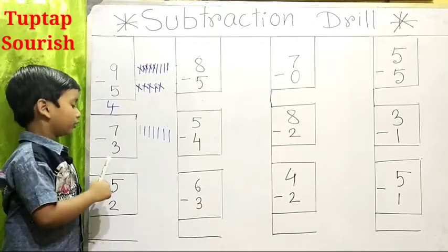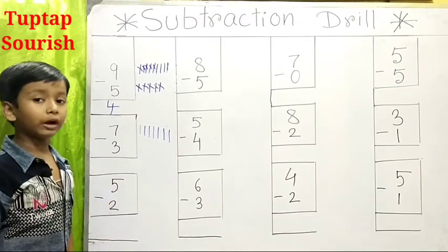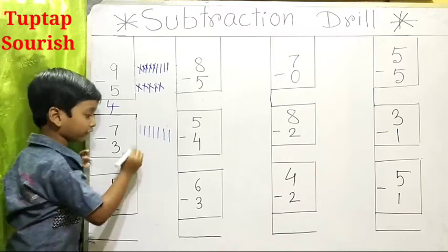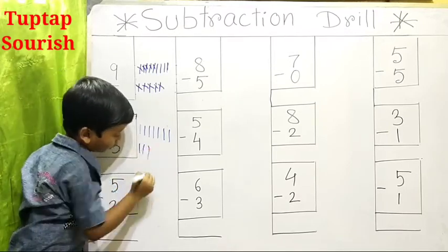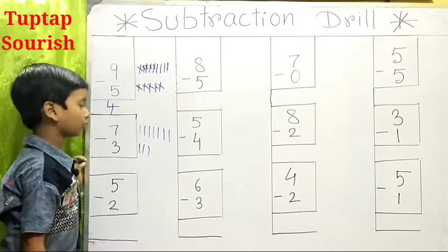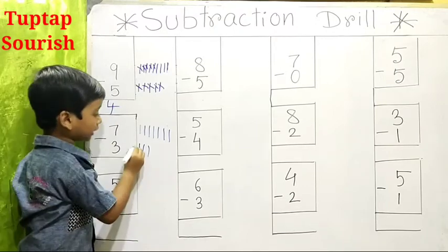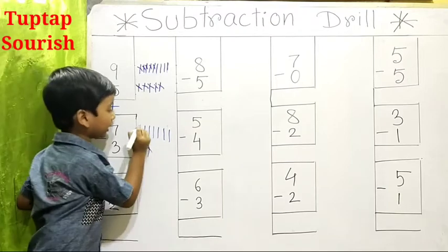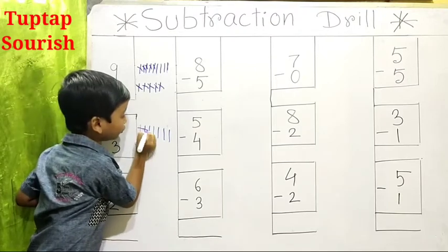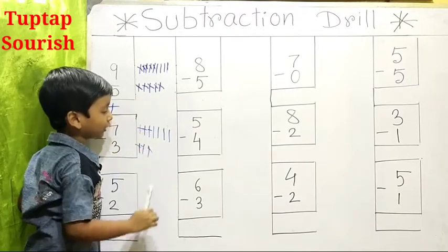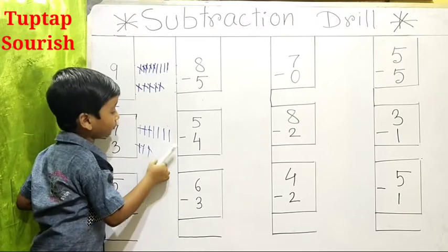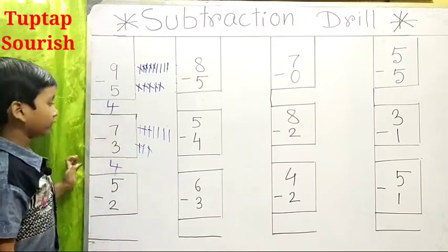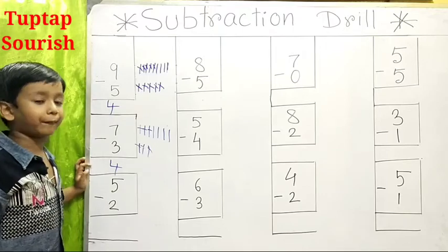And you have broken 3, so let's draw 3 lines: 1, 2, 3. So here we cut 1, 2, 3. And here 1, 2, 3. How many left? 1, 2, 3, 4. So our answer is 4.